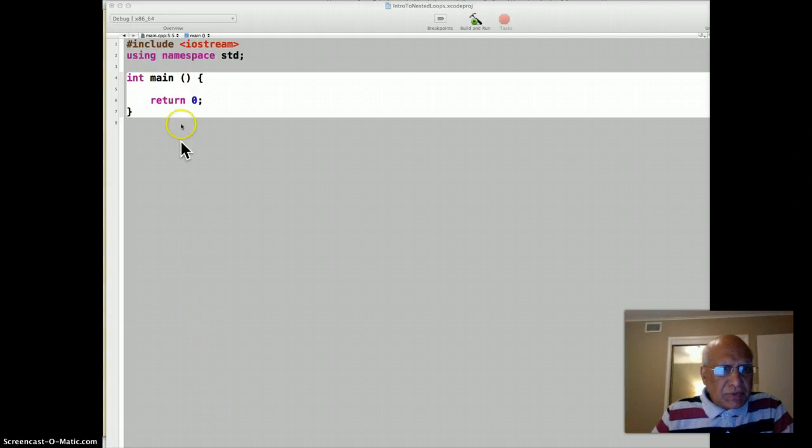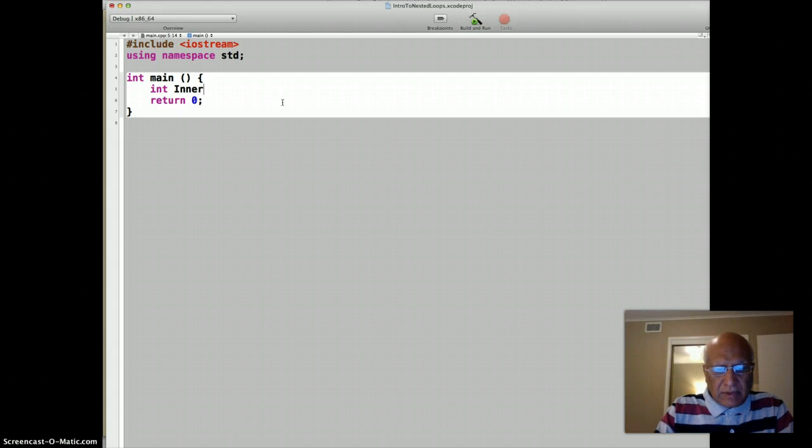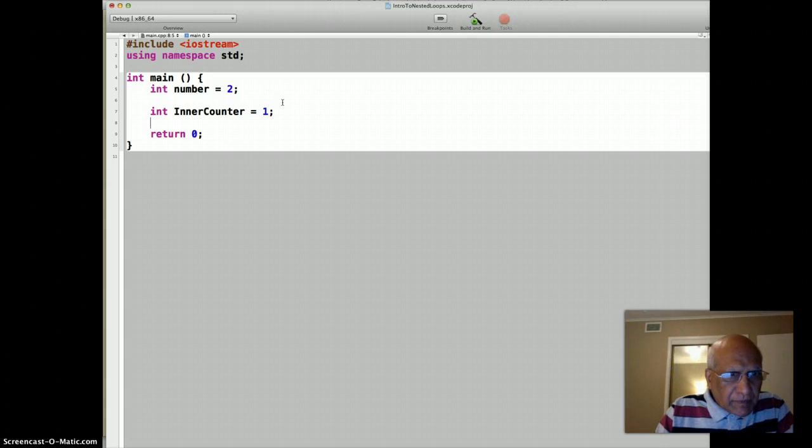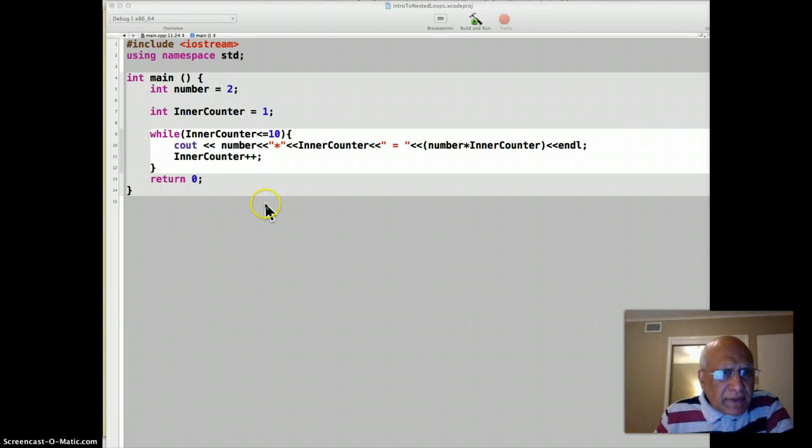Okay, so I'm in Xcode now. Let me type int number = 2, and then the counter for the inner loop. So the inner loop is pretty simple. I set a number equal to 2 because I want to print the table of 2. I initialize the inner loop counter to 1.